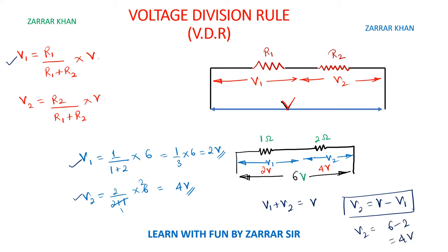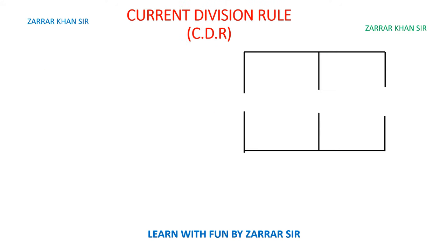So it's very simple — you just use these formulas to calculate V1 and V2. Now let's move to the current division rule. Do remember: in the voltage division rule, when we calculated V1 we considered R1, and when we wanted V2 we considered R2. What is the difference between voltage division and current division rule?